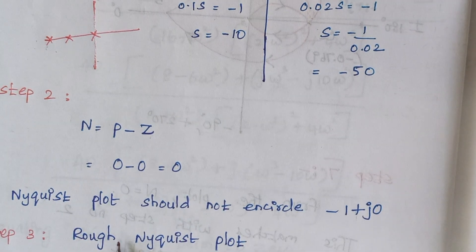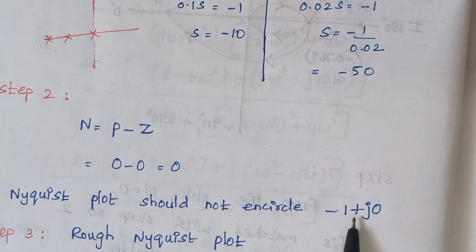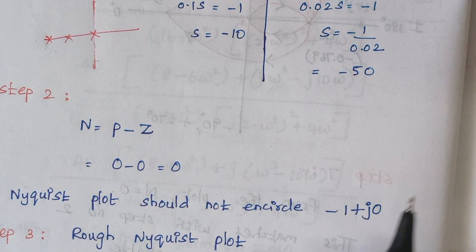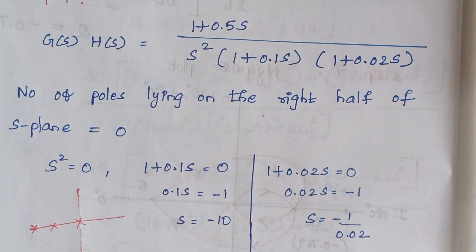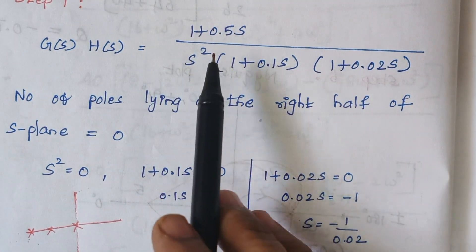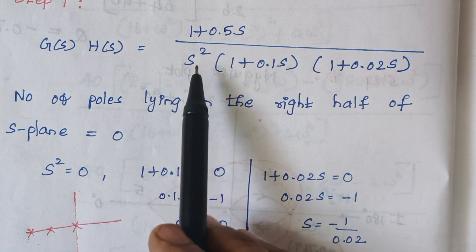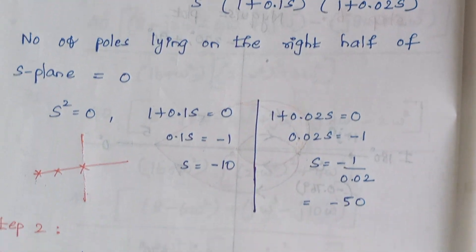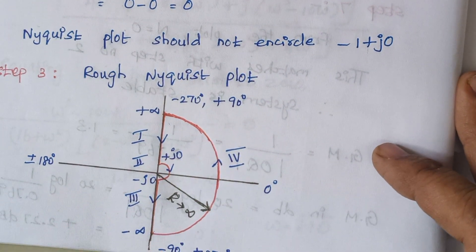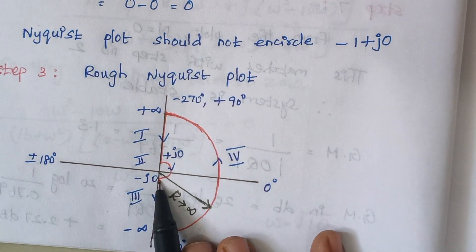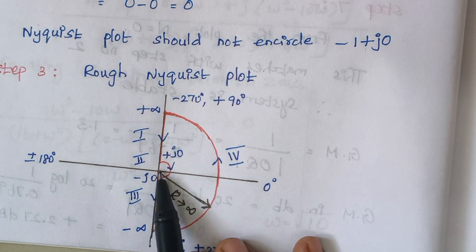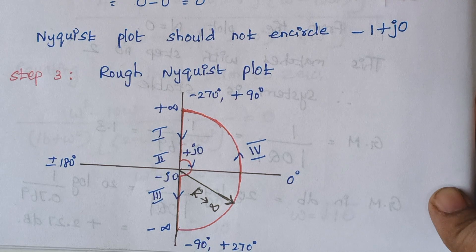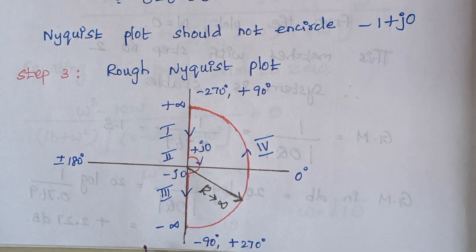Since N = 0, the Nyquist plot should not encircle the −1 + j0 point. Step 3 is drawing the rough Nyquist plot. There is a double pole at the origin, so whenever there is a pole at origin the rough Nyquist plot must bypass (go around) the origin. The plot is divided into several sections.